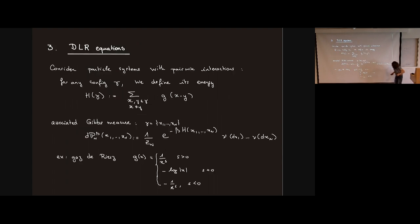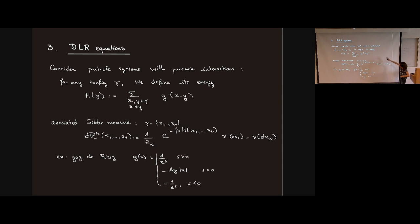In the remaining time I'll try to explain our method for the sine beta process, which is completely different from the Ghosh-Peres strategy — not dealing at all with the variance of linear statistics. It is based on a tool from classical statistical mechanics called the DLR equation. DLR comes from the godfathers of statistical mechanics — Dobrushin, Lanford, and Ruelle — a long time ago. I'll try to explain what it means and how it relates to number rigidity.